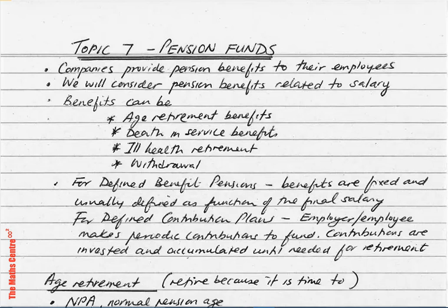Companies provide pension benefits to their employees. Pensions are paid when full-time employment ceases. These pension benefits can be paid by the insurance company, the government — or the state — or by the employer.